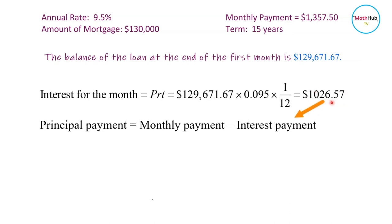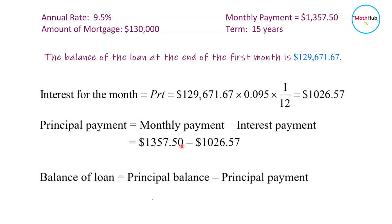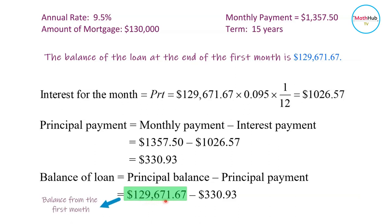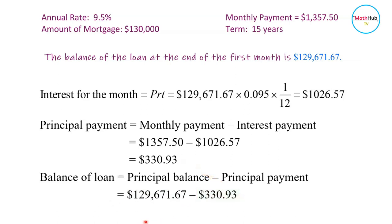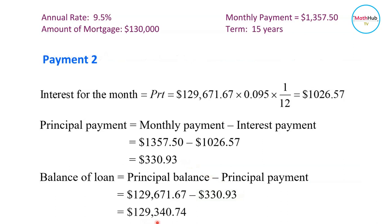The $1,026.57 goes to the interest payment. The monthly payment is still $1,357.50. Subtracting the interest, you get $330.93, which goes to the principal. At the end of the second month, the balance of the loan will be $129,671.67 minus $330.93, which equals $129,340.74.